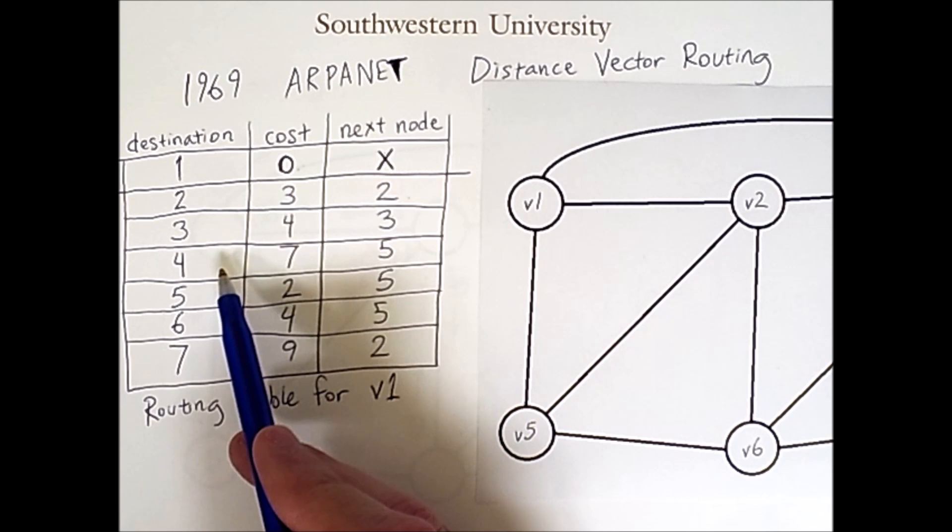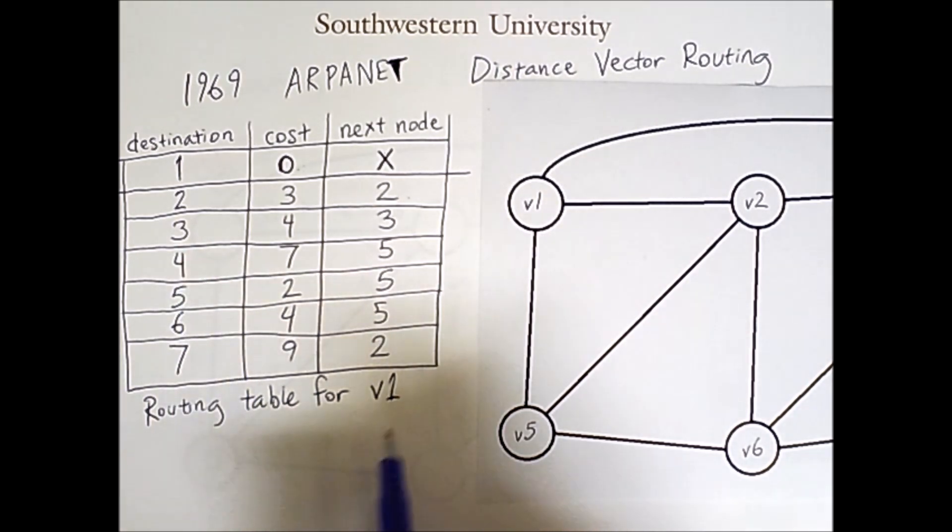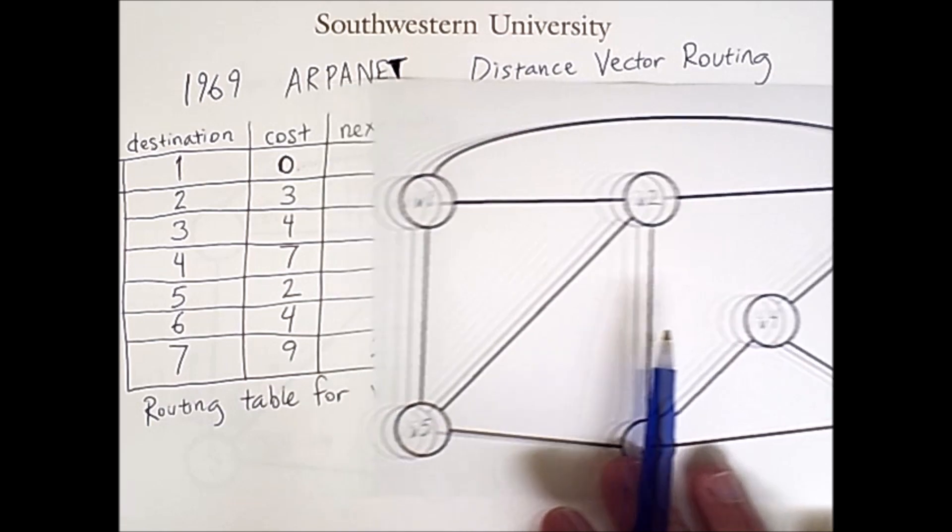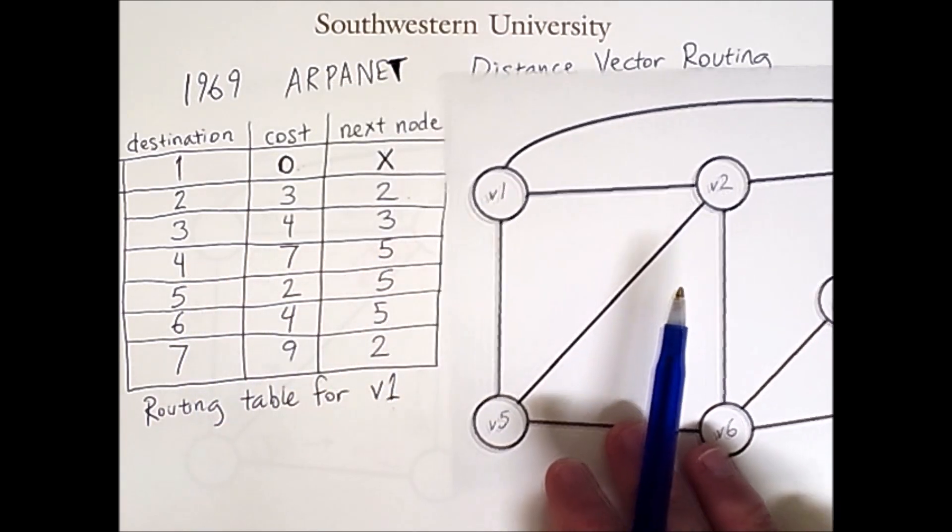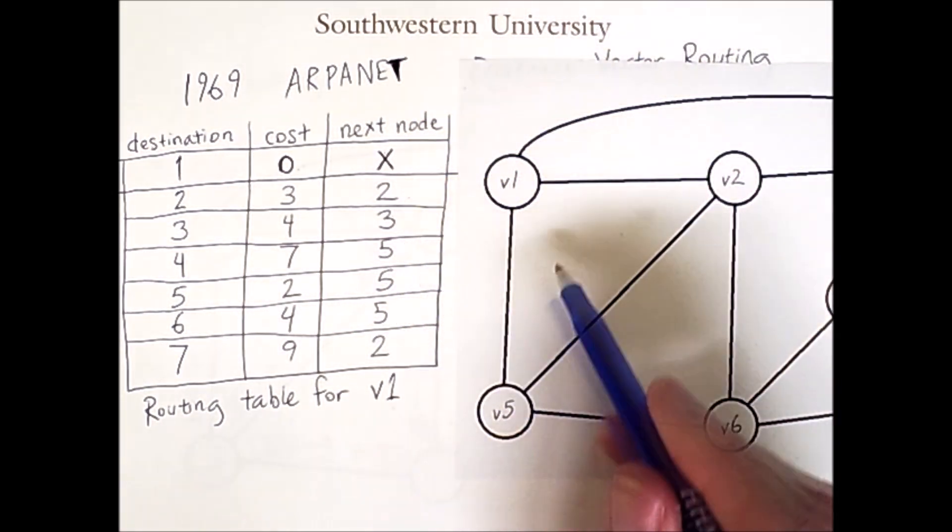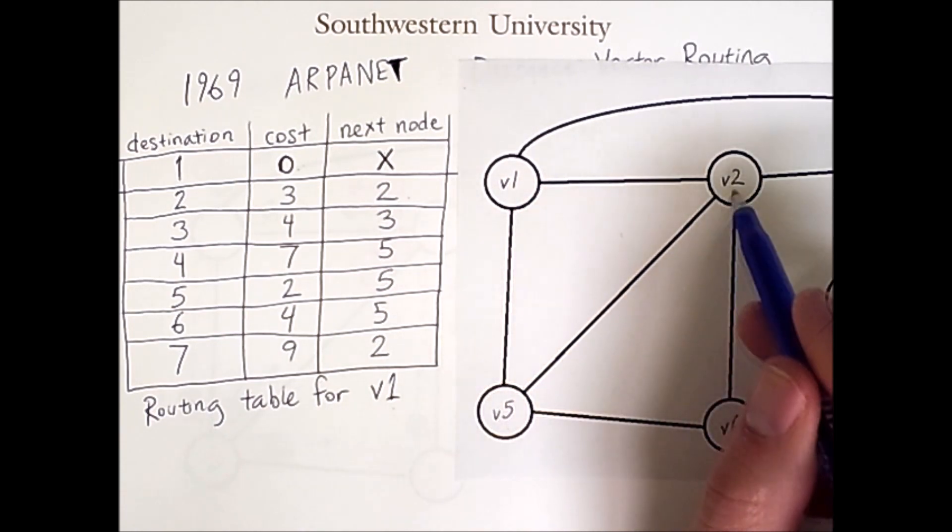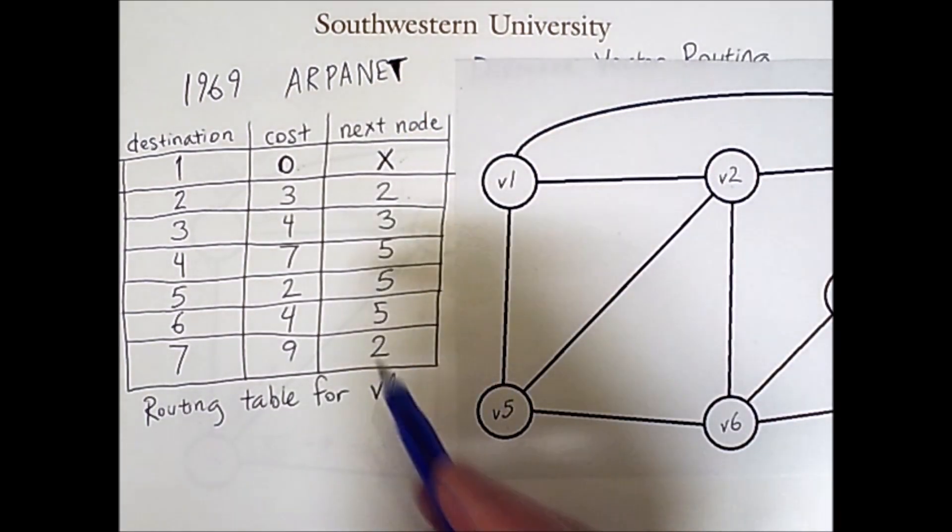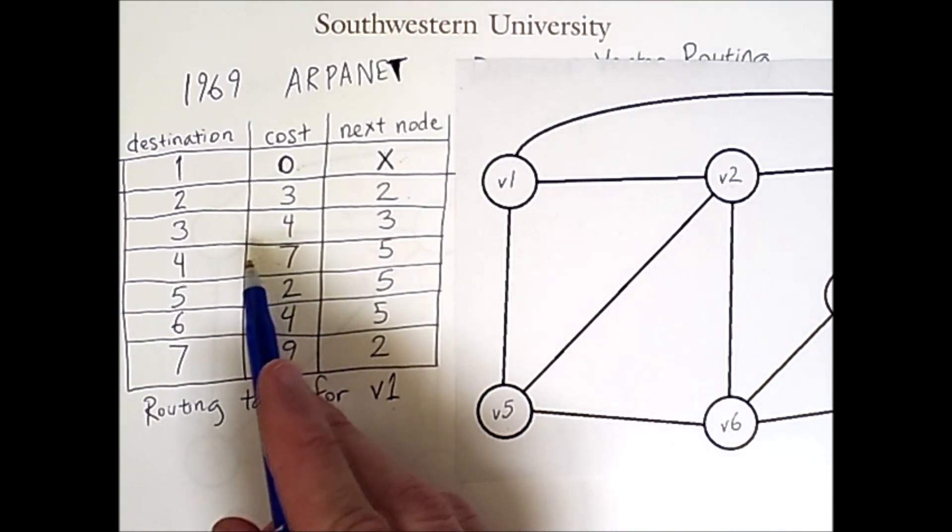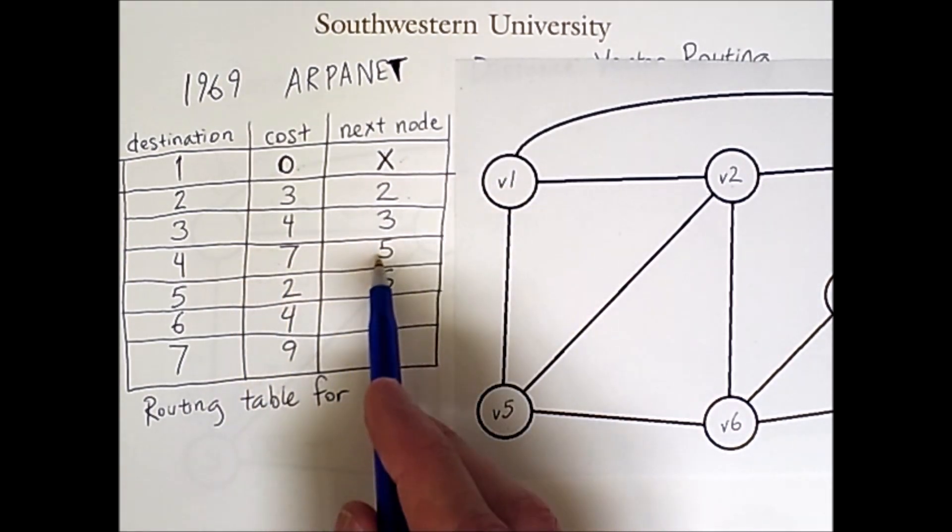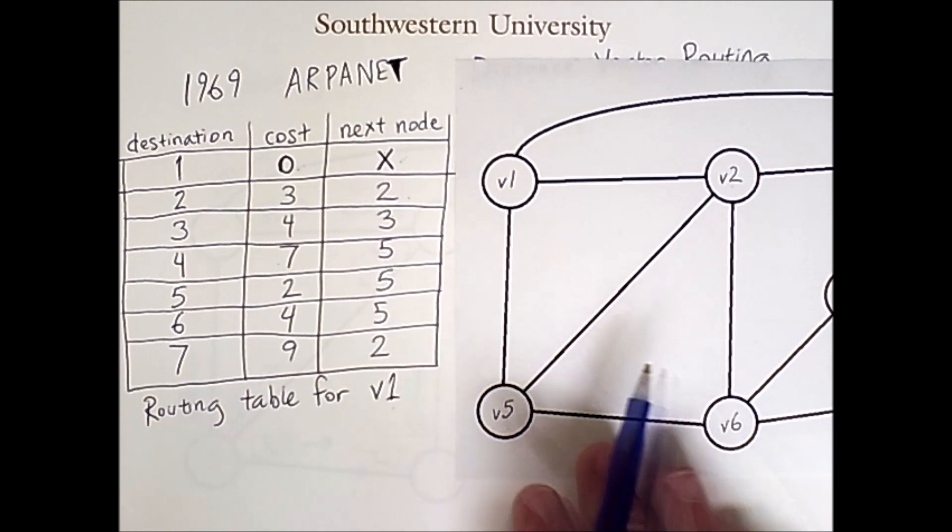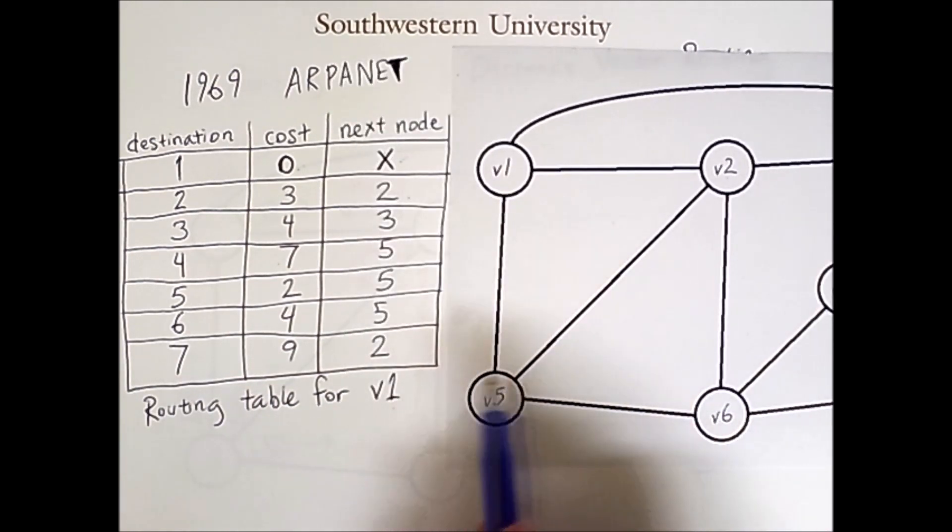However, to get to any of the nodes which node 1 is not directly connected to, we have to take a few more steps. So if node 1 wants to send a packet to node 4, shown here, then it will first send that packet to node 5. Every entry in this column must be one of the immediate neighbors of node 1: 5, 2, or 3. The one exception being when it doesn't resend the packet.